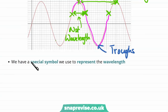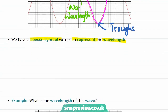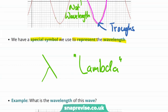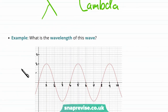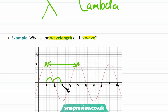We have a special symbol to represent the wavelength — the Greek letter lambda. For example, to find the wavelength of a wave on a graph, we find the distance between two peaks. Using this peak here and this peak here, we count along the axis: one, two, three, four — so the wavelength lambda equals four.